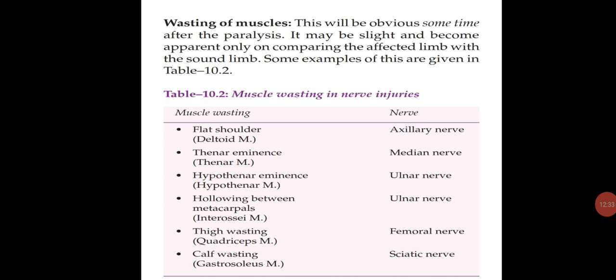Wasting of muscles: this becomes obvious sometime after paralysis and may become apparent only on comparing the affected limb with the sound limb. Examples: flat shoulder — wasting of the deltoid, nerve involved is axillary nerve; thenar eminence wasting — thenar muscles, median nerve; hypothenar eminence wasting — ulnar nerve; hollowing between metacarpals — ulnar nerve; thigh wasting — quadriceps muscles, femoral nerve; calf wasting — gastrosoleus muscles, sciatic nerve involvement.